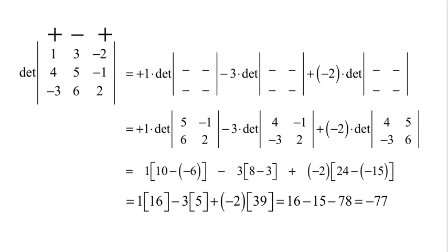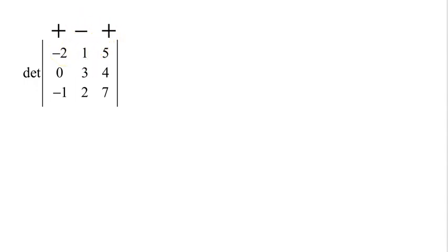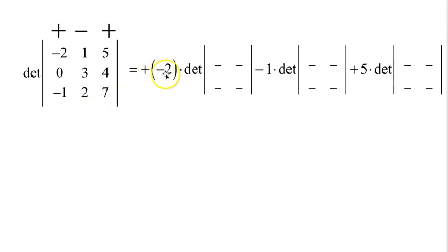Let's do one more — another 3 by 3 matrix. Remember you've got to have plus-minus-plus across the top. So it's plus negative 2 times its minor, minus 1 times its minor, plus 5 times its minor. Plus negative 2, minus 1, plus 5.